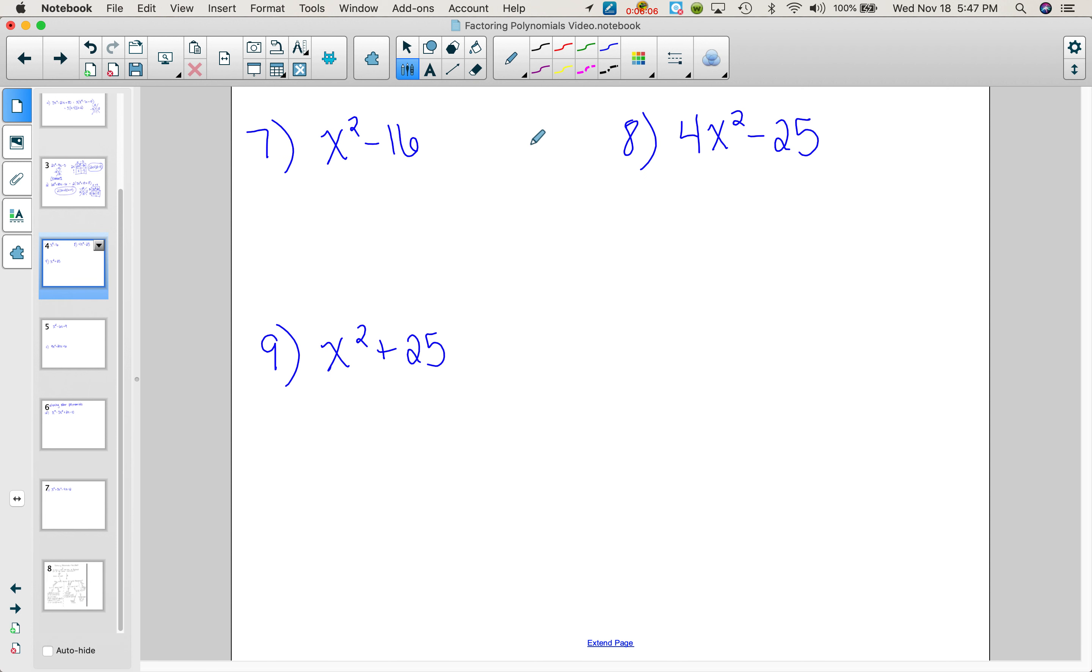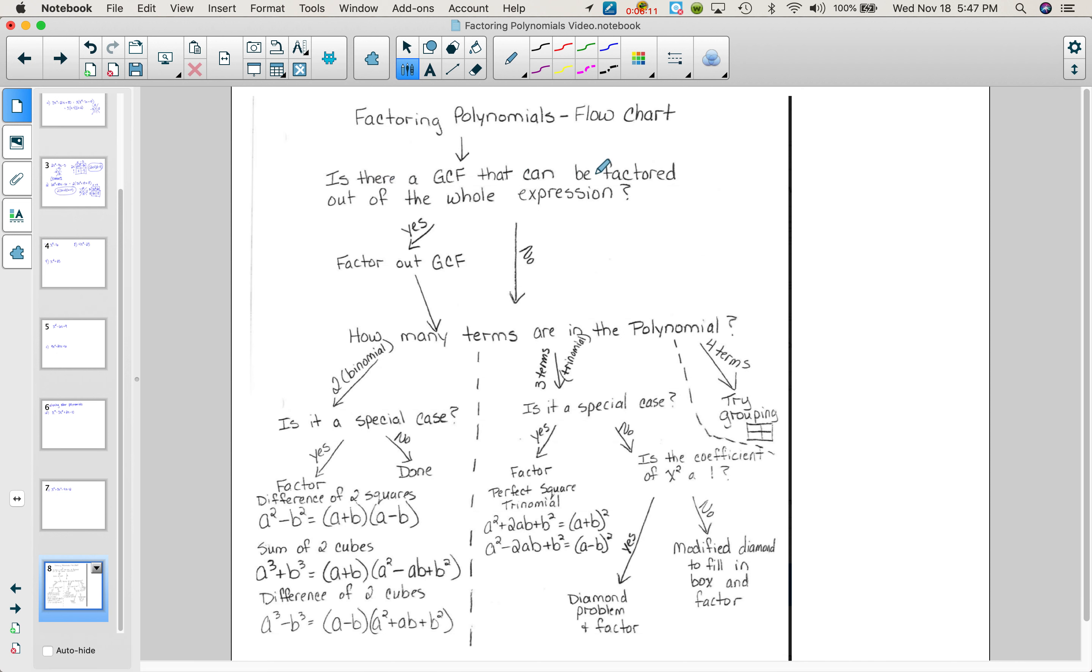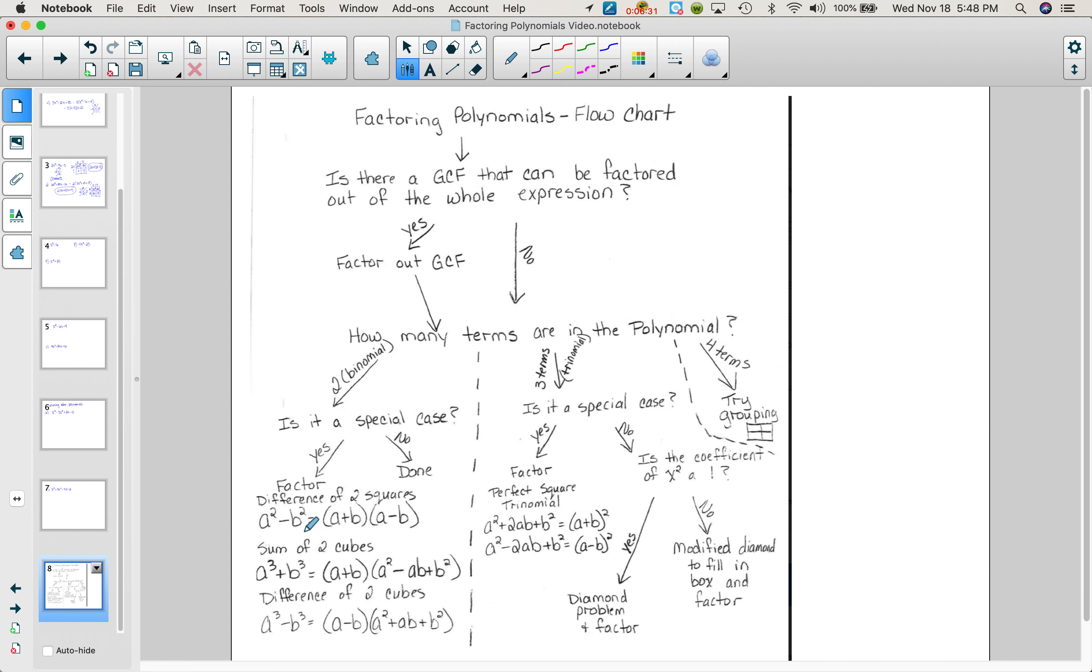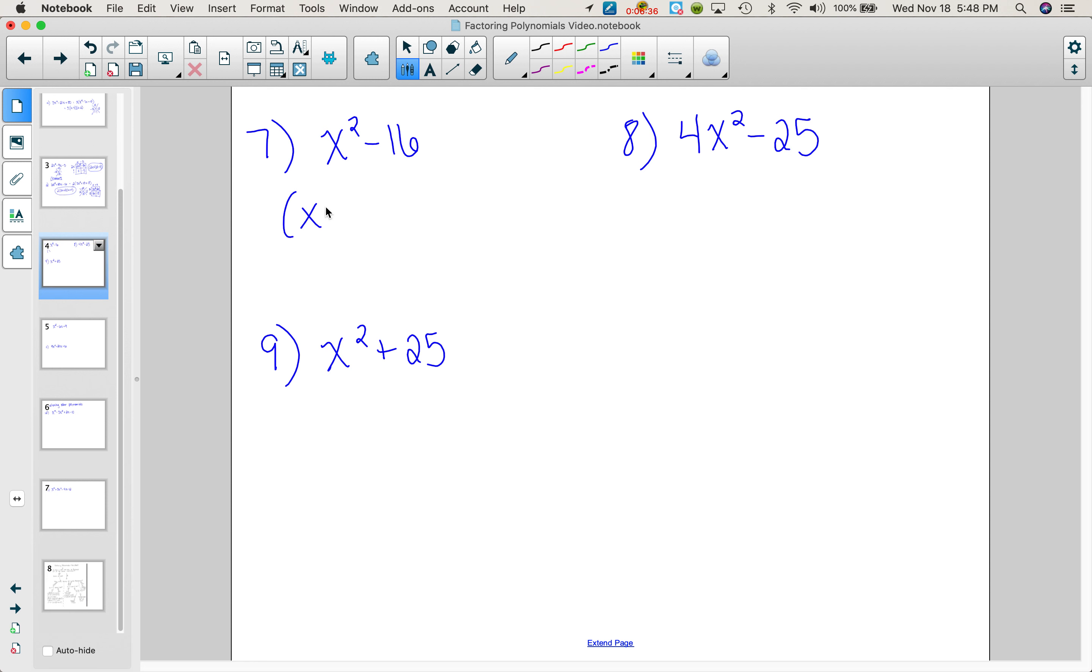Next problem. Let's go through our factoring flowchart. We have x squared minus 16. Is there a GCF? No. How many terms are in the polynomial? 2. Is it a special case? Well, we have them listed here. We're not dealing with the sum and difference of two cubes right now, but we have the difference of two squares. So if we look back, that's what we have, the difference of two squares. So using the formula, a squared minus b squared equals a plus b times a minus b. So this is just x plus 4 times x minus 4. Done.